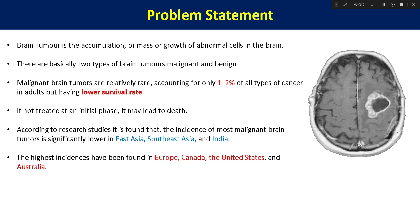There are basically two types of brain tumors: malignant and benign. Malignant tumors are really very serious and they require immediate treatment, else they will become fatal. Benign tumors have slightly less impact; they don't interfere much with other parts of the body and they remain silent, so they don't require immediate treatment, though in some cases they may also become malignant. Malignant brain tumors are relatively rare.